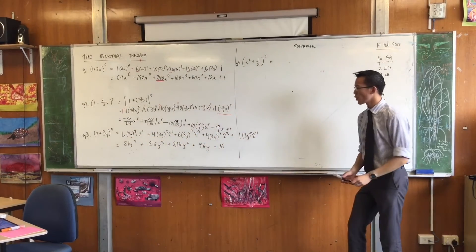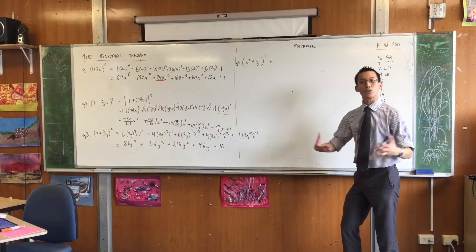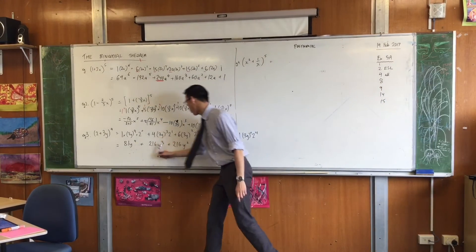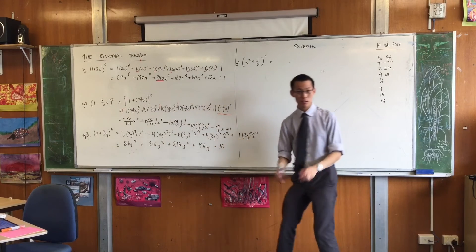Okay, so just double check. Make sure you haven't missed any terms. You can see I've got my powers: 4, 3, 2, 1, 0. That checks out.